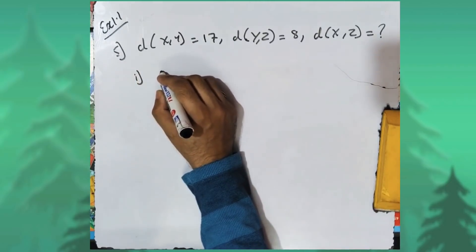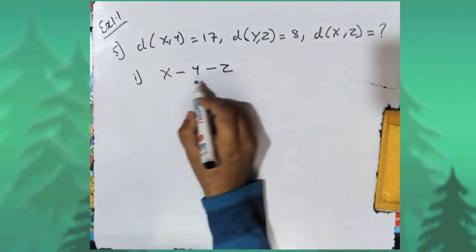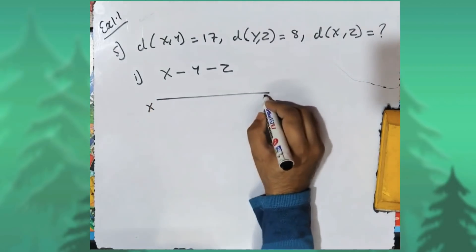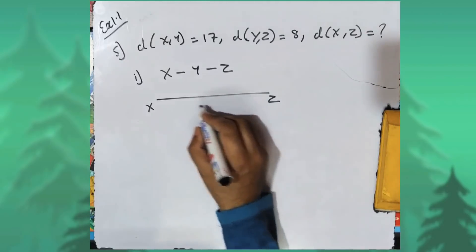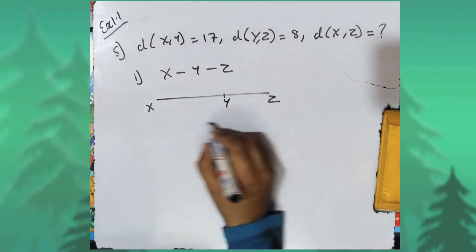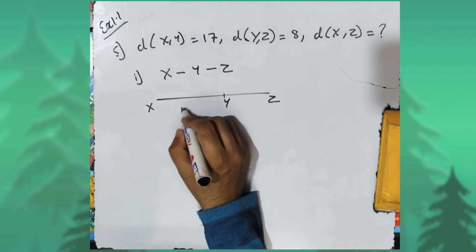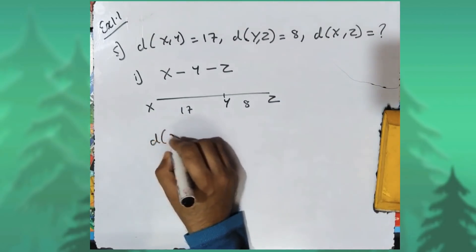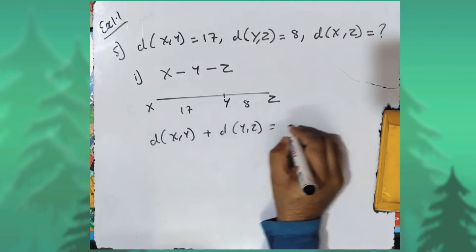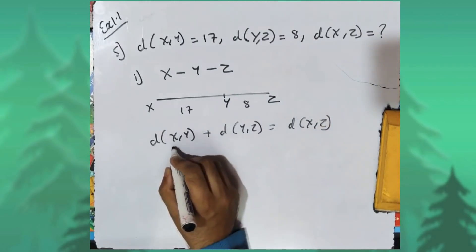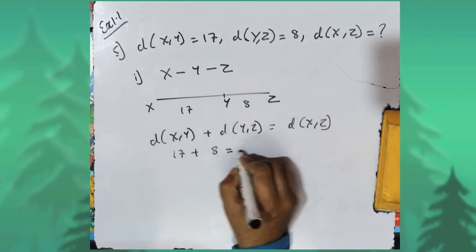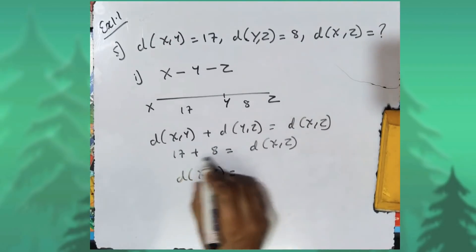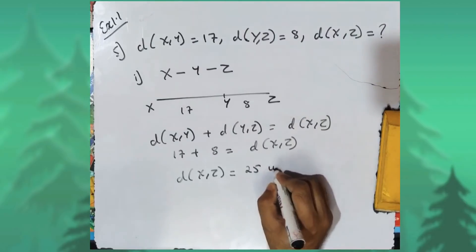First possibility: Y is between X and Z. Points X and Z are at the extremes and Y is somewhere in between. Distance XY is seventeen and distance YZ is eight, so distance XY plus distance YZ equals distance XZ. Therefore distance XZ equals seventeen plus eight, which is twenty-five units. Second possibility: Z is between X and Y. Points X and Y are at the extremes with distance seventeen, and Z is in between with distance YZ equal to eight. Distance XZ plus distance YZ equals distance XY, so distance XZ plus eight equals seventeen, meaning distance XZ equals seventeen minus eight, which is nine units.